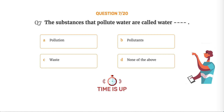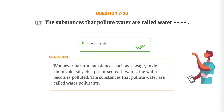The correct answer is Option B, Pollutants. Whenever harmful substances such as sewage, toxic chemicals, silt, etc. get mixed with water, the water becomes polluted. The substances that pollute water are called water pollutants.